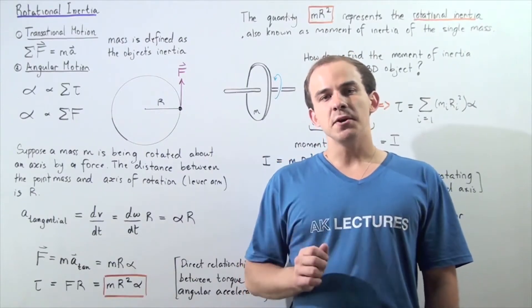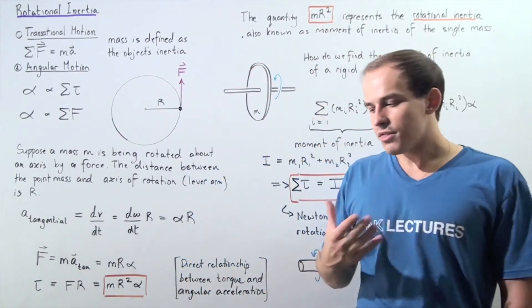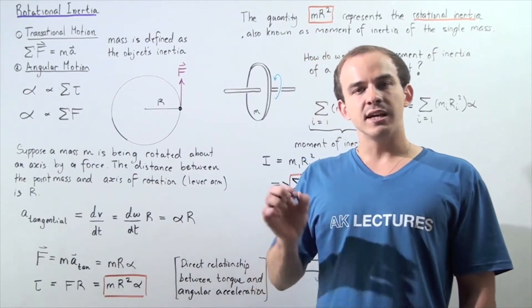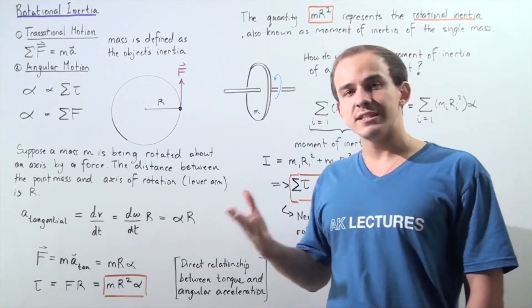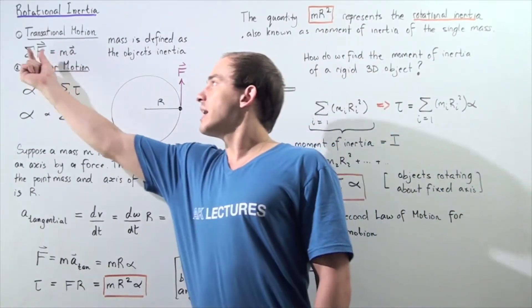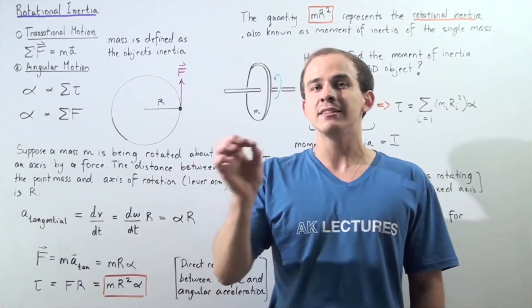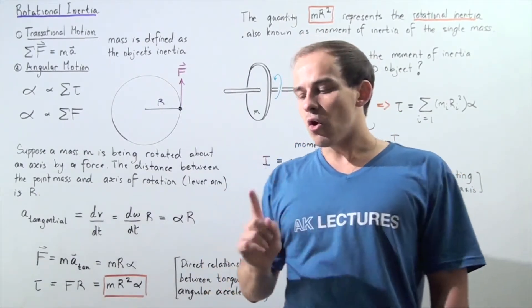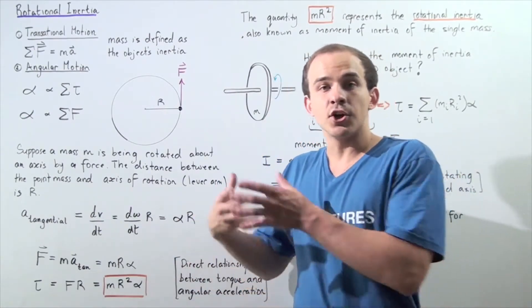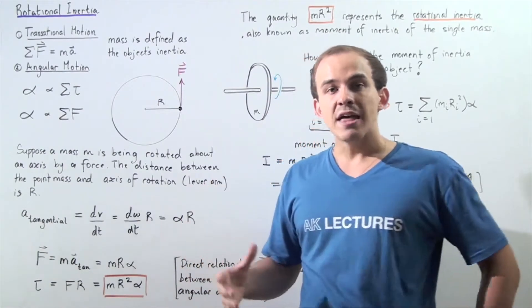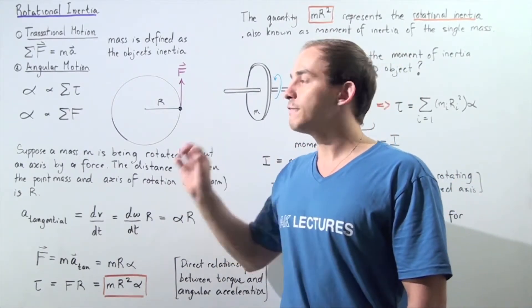Whenever an object is experiencing translational motion and that object is accelerating, a net force must be acting on that object causing that acceleration. This is known as Newton's second law of motion. It states that the sum of all forces acting on the object is equal to the product of the object's mass and linear acceleration. Recall that we define mass as the inertia of that object — the higher the inertia, the higher the tendency of that object to resist its change in motion.